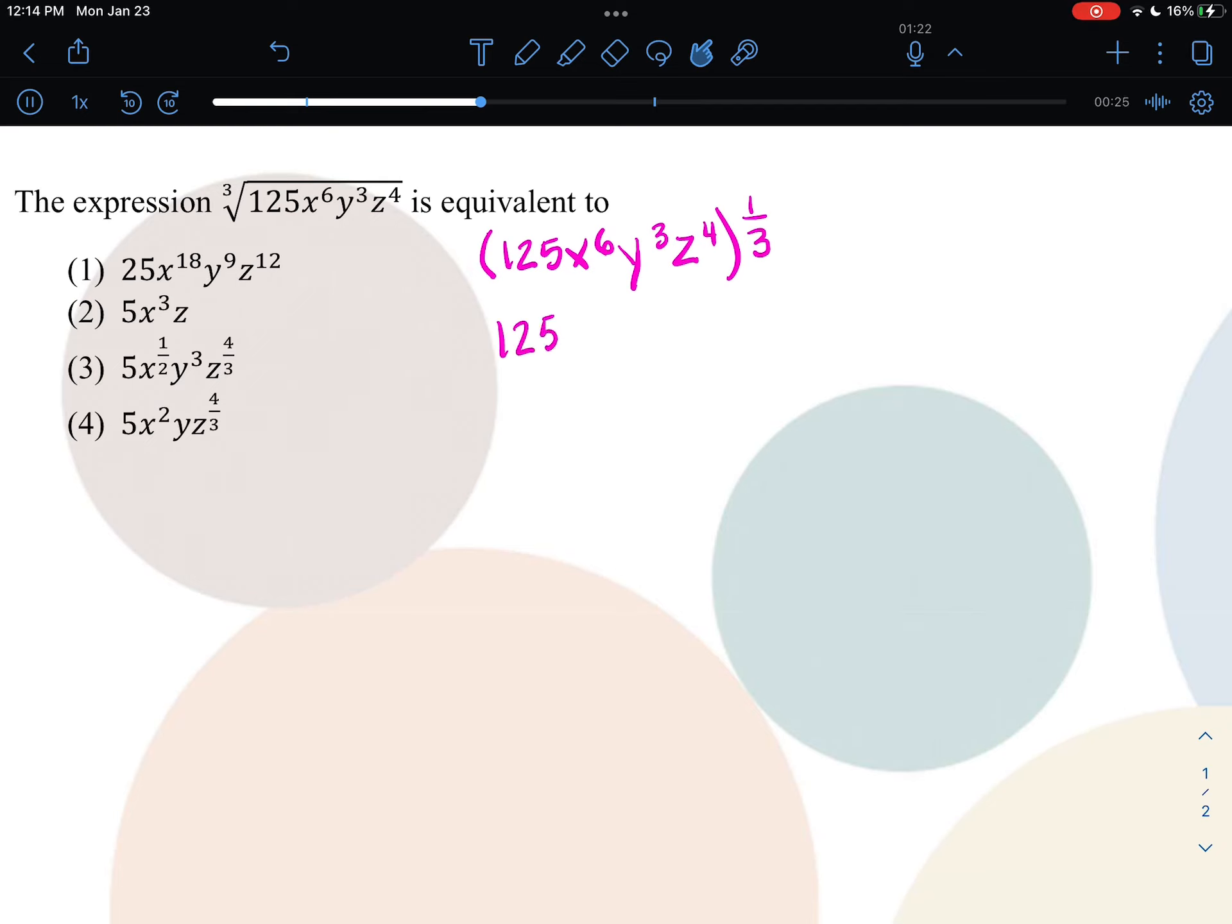Then I'm going to rewrite it as 125 to the 1/3 times x to the 6th to the 1/3 times y to the 3rd to the 1/3 times z to the 4th to the 1/3. You can then begin to simplify them.